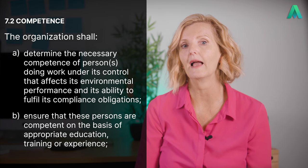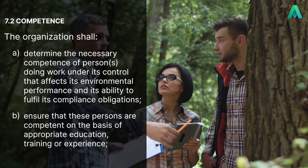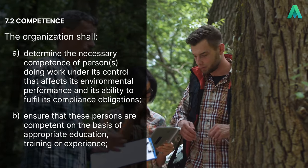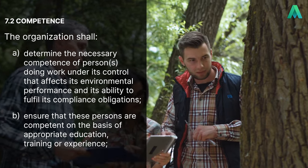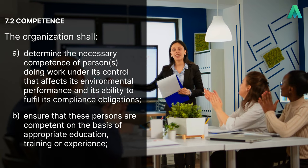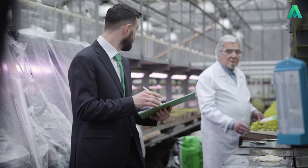Okay, let's get started. Let's take a look at what clause 7.2 wants us to do. First off, the clause states that the organisation shall: A, determine the necessary competence of persons doing work under its control that affects its environmental performance and its ability to fulfil its compliance obligations. It's up to the organisation to figure out what competence requirements are needed for the different roles relevant to the environmental management system.